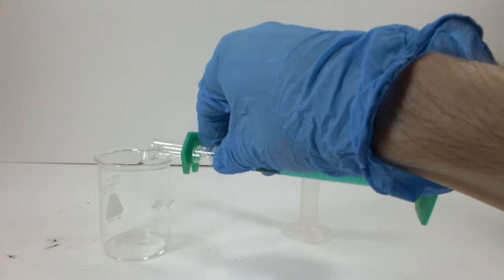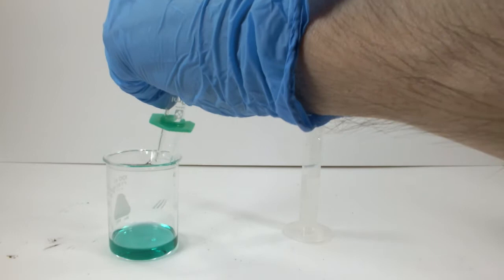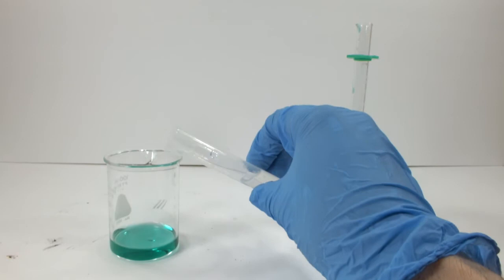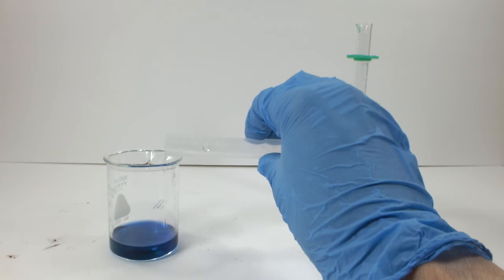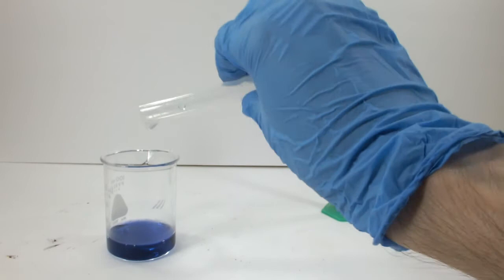While I'm at it, I'm going to make the sulfate complex too. Here are 10 milliliters of 1 molar nickel sulfate solution. I'm going to add an excess of concentrated 14.3 molar ammonia solution, and right away you can see this deep royal blue color develop.